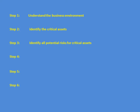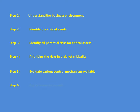Then you identify the risks applicable to those critical assets. The fourth step is to prioritize the risks in order of criticality, since not all risks have the same impact. Fifth, for each risk there can be multiple control mechanisms, but the cost of control should always be less than the cost of the risk, so you evaluate all available control mechanisms. Finally, the sixth step is to apply the relevant control.